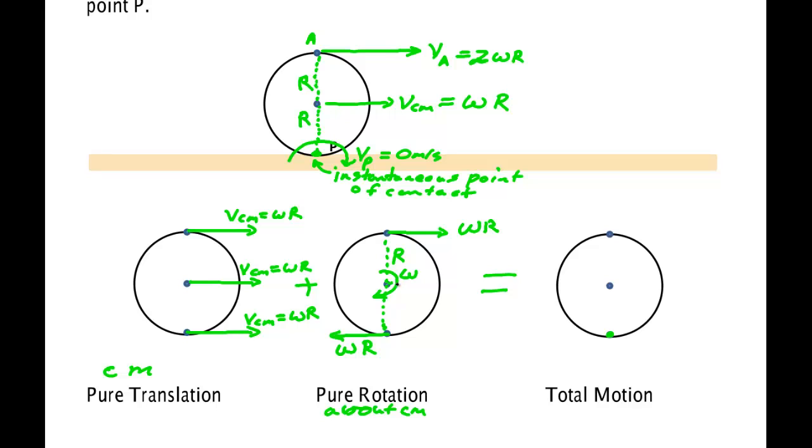This one has, is at the center, it has no arrow. This has an arrow of Omega R. When you add Omega R to zero, you get an arrow. That's Omega R.